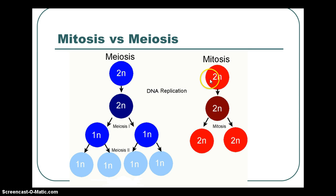In mitosis, a diploid cell replicates to produce two identical diploid somatic cells. Meiosis produces four haploid gametes — sperm or egg depending on the individual's gender. Meiosis is the same in any organism that reproduces sexually: roses, squirrels, dolphins, and fish all carry out meiosis to produce their gametes.